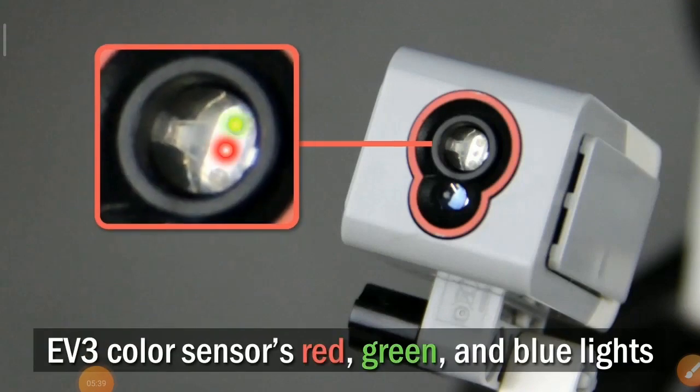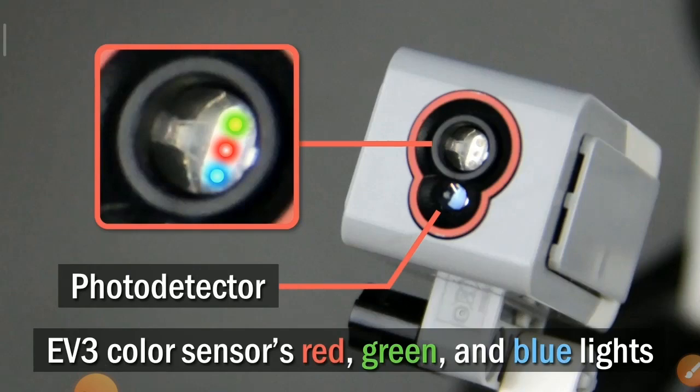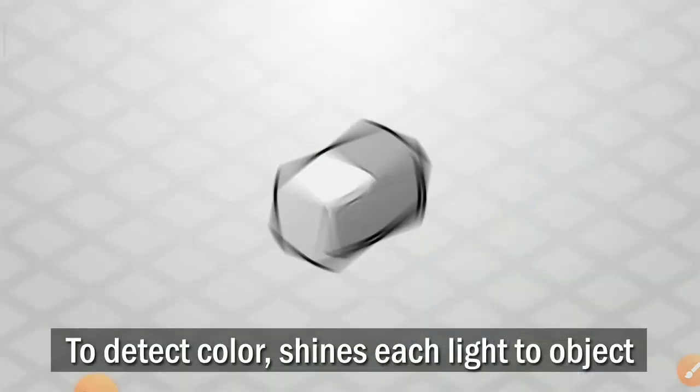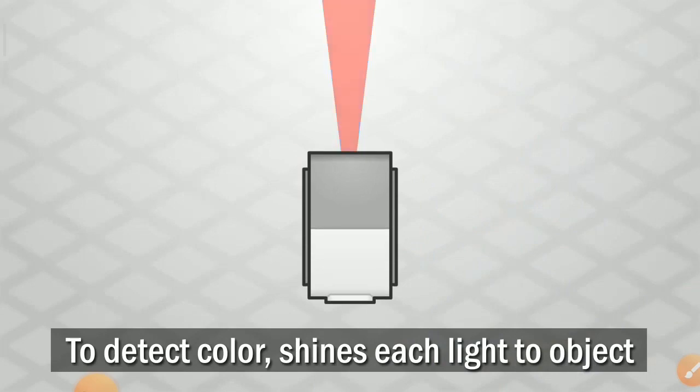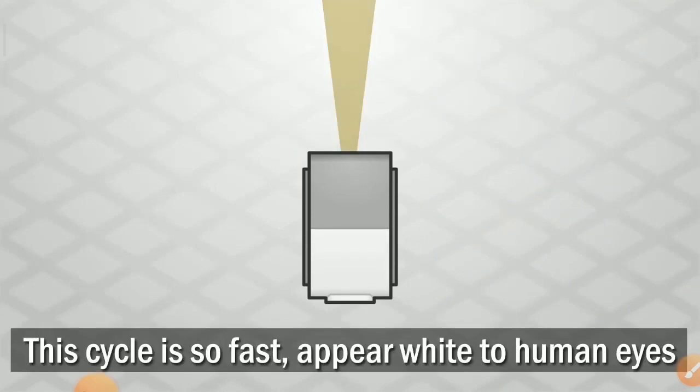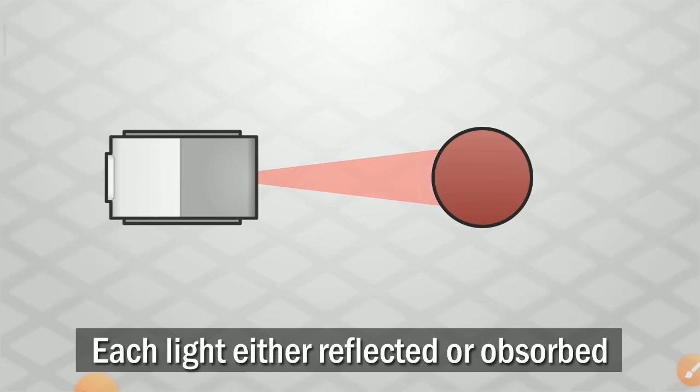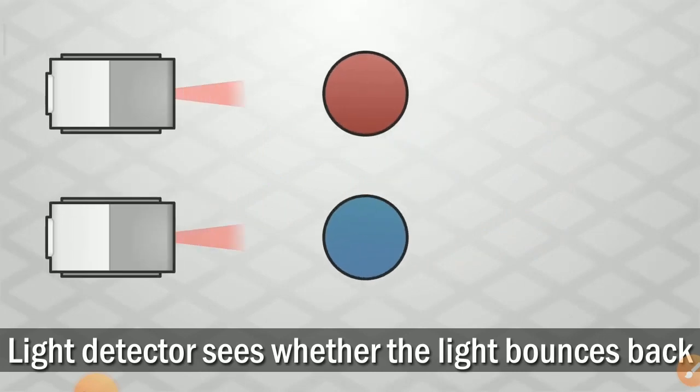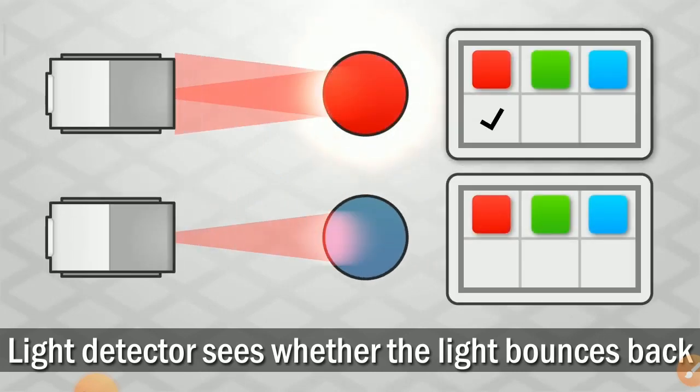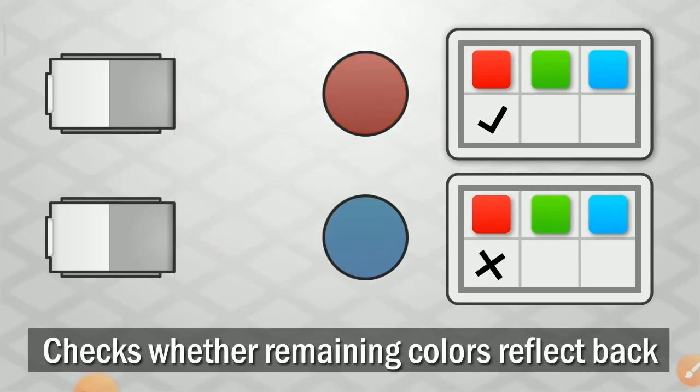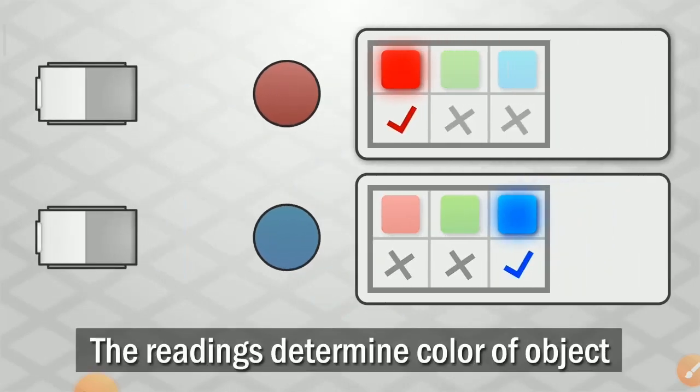It consists of three colors: red, green and blue lights, and one photodetector. The detector shines each light to the object. This cycle is very fast, appears white to human eyes. Each light gets reflected or absorbed. The light detector sees whether the light bounces back and checks whether remaining colors reflect back. The red rings determine color of the object.